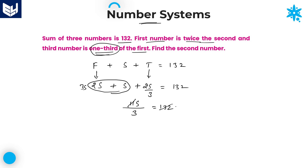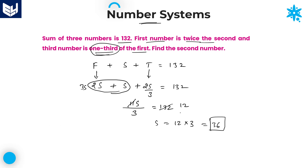Here, you can cancel 11 from both sides. So s/3 = 12, therefore s = 12 into 3, which is equal to 36. That is the second number. If you want the first number, it is 2s. If you want the third number, it is 2s/3. In that way, you can calculate any of the three numbers. The required answer is 36.